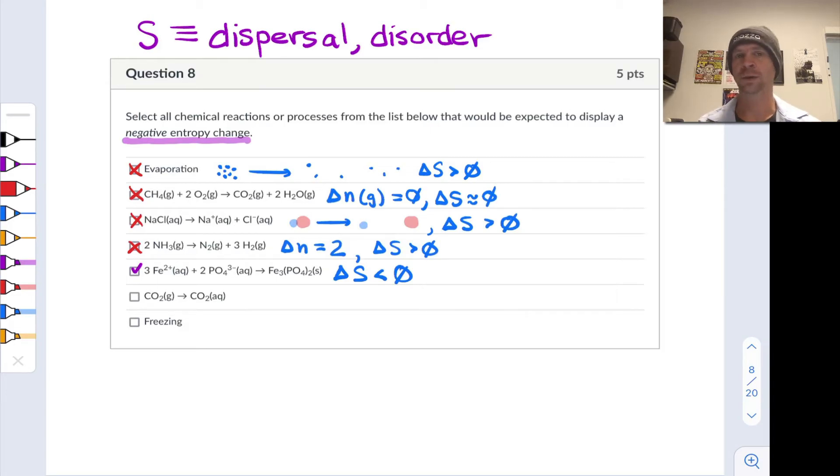CO2 gas to CO2 aqueous, that's actually a similar situation to the one above. We're taking CO2 gas, which is generally widely dispersed over a very large volume, and concentrating it into a smaller volume in an aqueous solution. So the CO2 particles become less dispersed, less random, less disordered. This is a delta S less than zero situation. So we'll go ahead and check that.